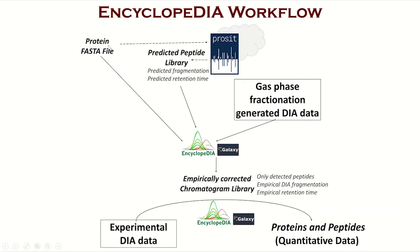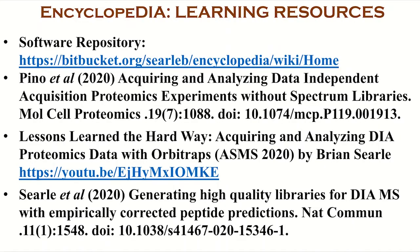So you have your protein FASTA file, a predicted peptide library generated from this protein FASTA, and the gas phase fractionated DIA data that goes into Encyclopedia to generate the chromatogram library. This is the approach that we will be discussing in this tutorial. For more information about Encyclopedia, readers are recommended to visit the following website or read the manuscripts and video materials.